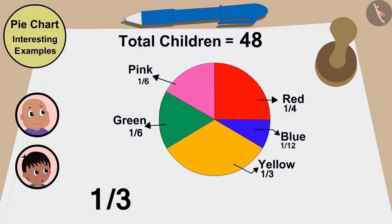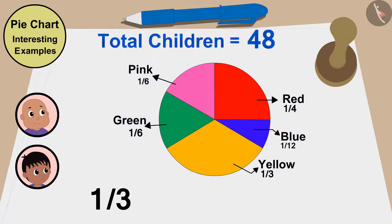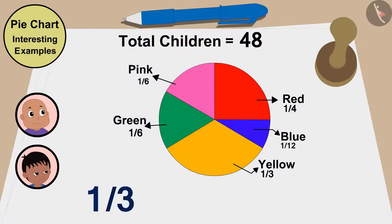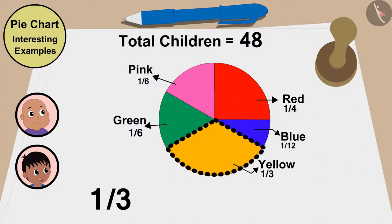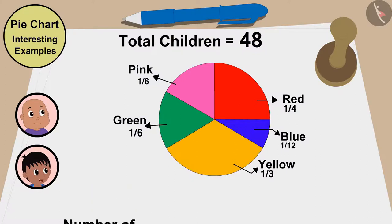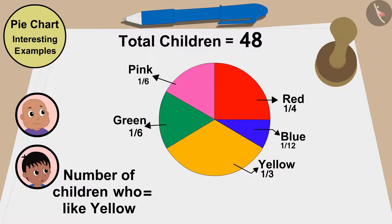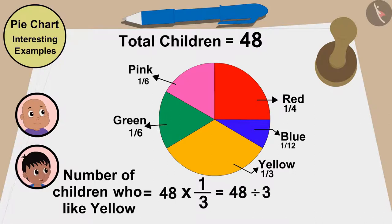We created this pie chart with information from 48 children, and one third of these children liked yellow. So the number of children who like yellow will be 48 multiplied by one third, or 48 divided by 3, which equals 16. A total of 16 children like yellow.